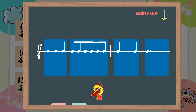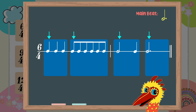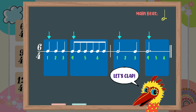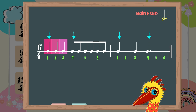Teacher, I'm ready! Before that, Ruby, do also take note of the main beats. Now let's clap together: 1, 2, 3, 4, 5, 6. 1, 2, 3, 4, 5, 6.